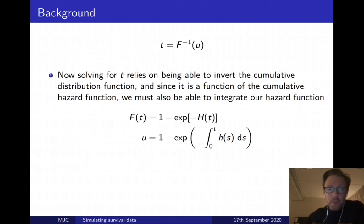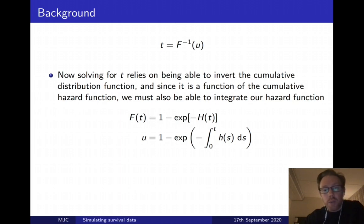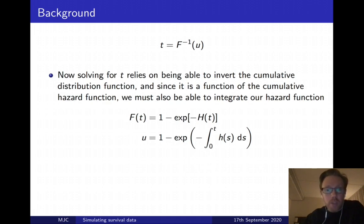Now, sometimes it's really simple, sometimes it's not. Solving for t relies on being able to invert the cumulative distribution function. Not only that, but in the survival context, that CDF is a function of our cumulative hazard function. Therefore, we must also be able to integrate our hazard function. So to solve for t, we need to evaluate not only our cumulative hazard function but also invert and solve for t. Things can get complicated pretty quickly.